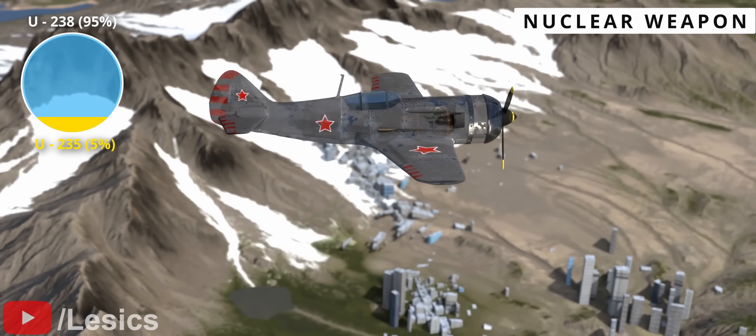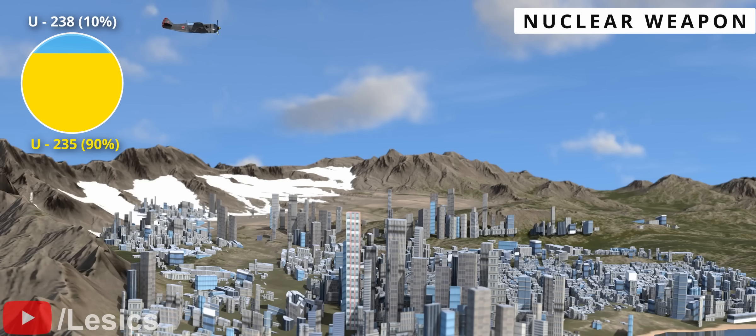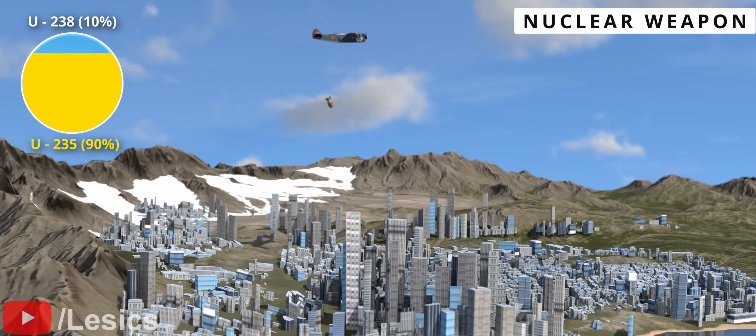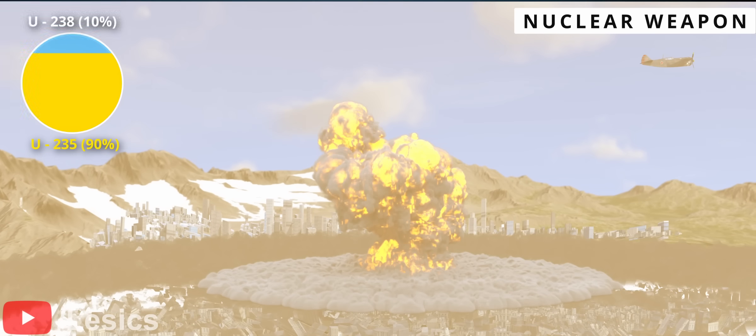But if we increase uranium-235 to 90%, it can destroy an entire city. To put it into perspective, the bomb dropped on Hiroshima had only 64 kilograms of uranium.